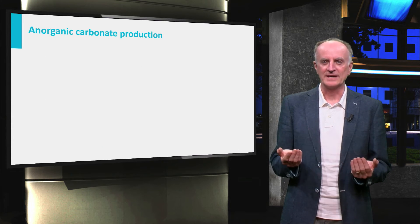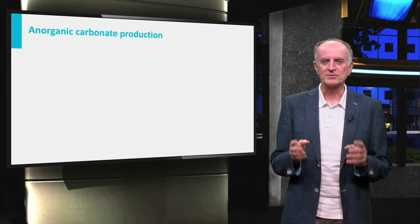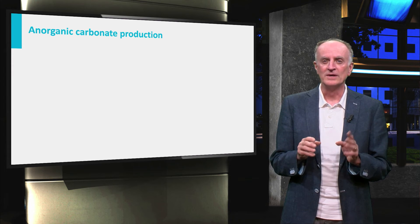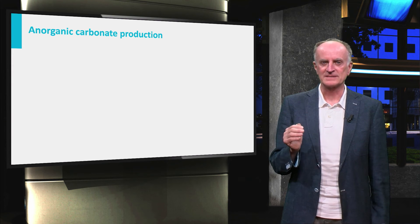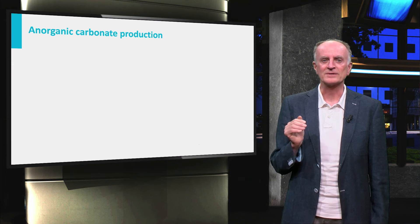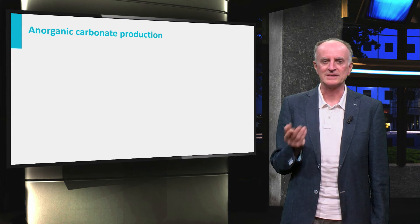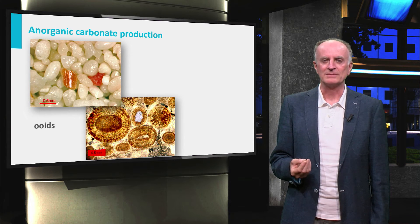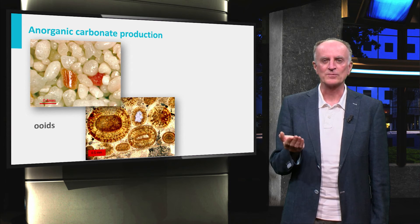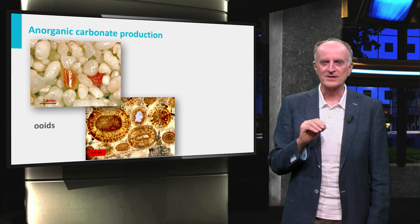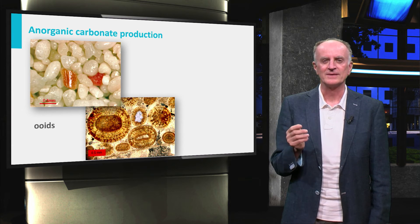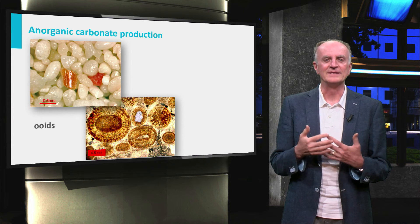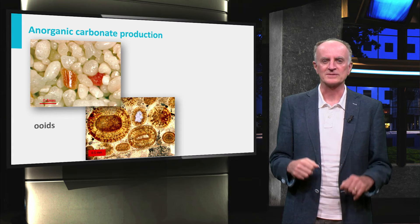Abiotic or inorganic carbonate production is the direct precipitation of calcium carbonate from seawater. Despite the name, we know that microorganisms such as bacteria play a very important role in assisting precipitation. Possibly the most famous products of abiotic precipitation are ooids — beautiful rounded particles with very regular internal structures. Rocks composed of ooids are called oolites, and when not fully cemented, they form ideal reservoirs with great porosity.